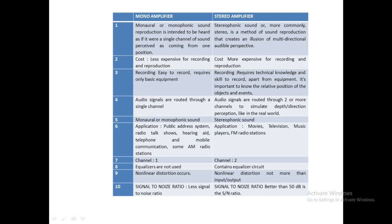Non-linear distortion is present in monophonic systems; in stereophonic, non-linear distortion is present but not beyond the input and output levels. The signal-to-noise ratio is less in monophonic, whereas in stereophonic it is better than 50 dB. For the diagram, we draw microphone, preamplifier, tone and volume control, power amplifier, and loudspeaker — repeated for both left and right channels in stereophonic.